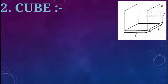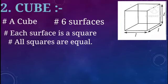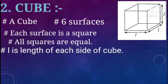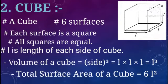Cube. The figure here represents a cube. It is made up of 6 surfaces, and each surface is a square — all squares are equal. If L is the length of each edge of the cube, then volume of a cube is equal to side³, that is L×L×L = L³. Total surface area of a cube is equal to 6L².